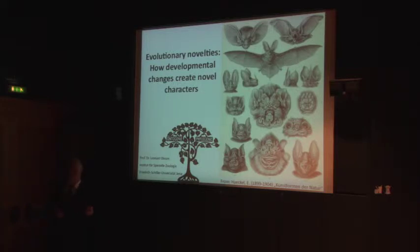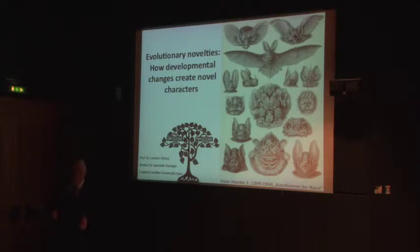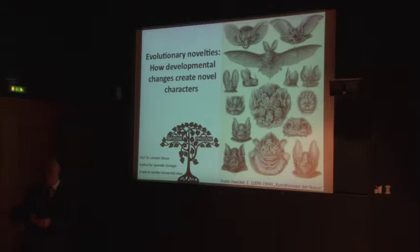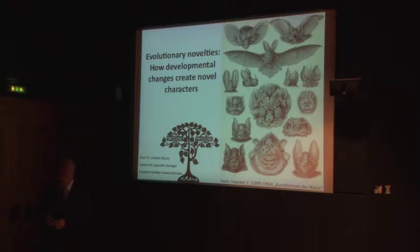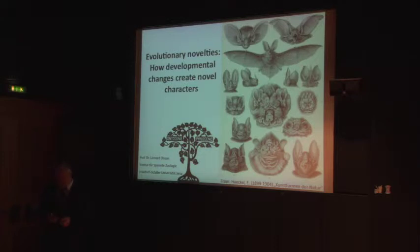The subtitle is 'How Developmental Changes Create Novel Characters.' My perspective as a developmental biologist who does evolution — the field that Haeckel called ontogeny and phylogeny — is that all the changes in structures we see in the adult have to be made during ontogeny, during development. It's absolutely necessary to understand developmental processes and regulatory mechanisms that govern development in order to understand how novel structures arise.